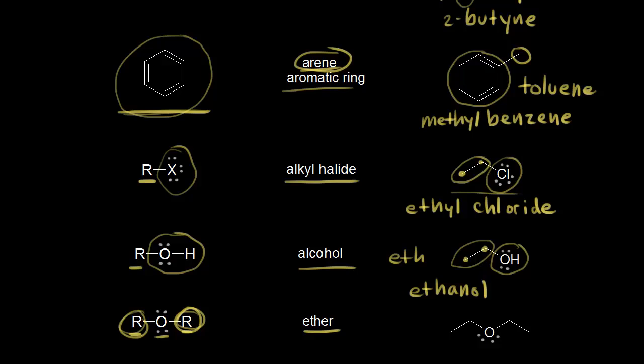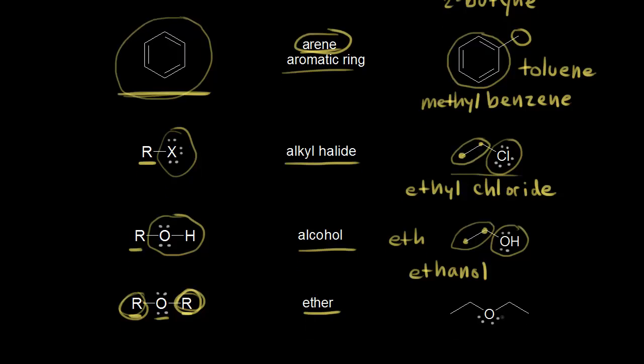Now, these R groups could be the same R groups or they could be different R groups. For the example on the right, we have R groups that happen to be the same. Here's our oxygen, and here's an R group, and here's an R group.